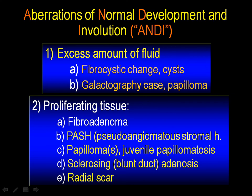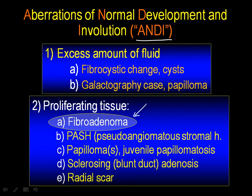We continue the lectures about the hyperplastic breast changes or NDEs by talking about one of the most frequently occurring hyperplastic proliferated breast changes: fibroadenoma. We have discussed the fibrocystic change, which causes a considerable differential diagnostic problem for the radiologists, but in that hyperplastic breast change, it was the excess amount of fluid that led to the formation of cysts and calcifications within the cysts, and we detailed how to solve this problem.